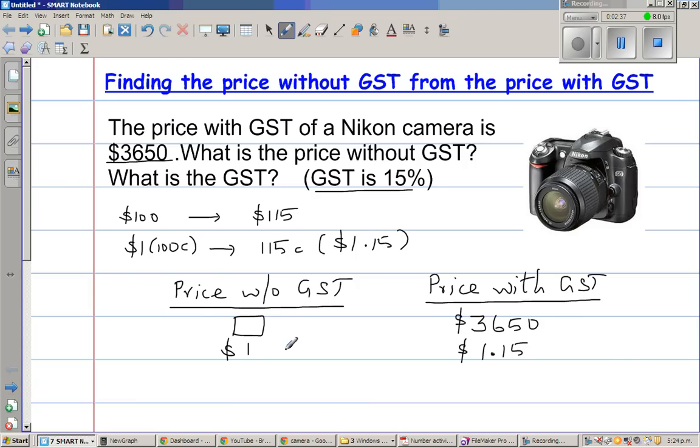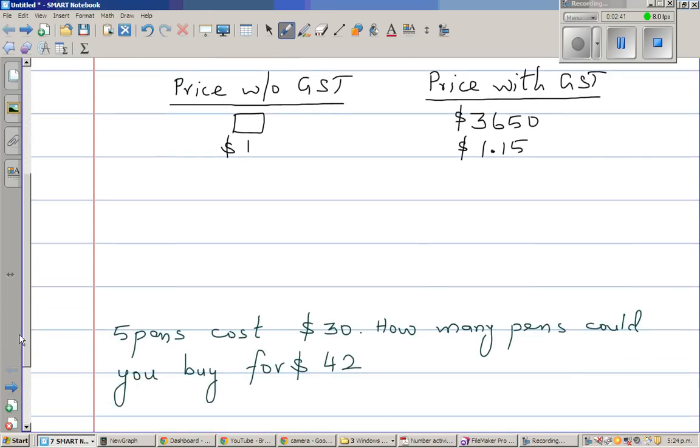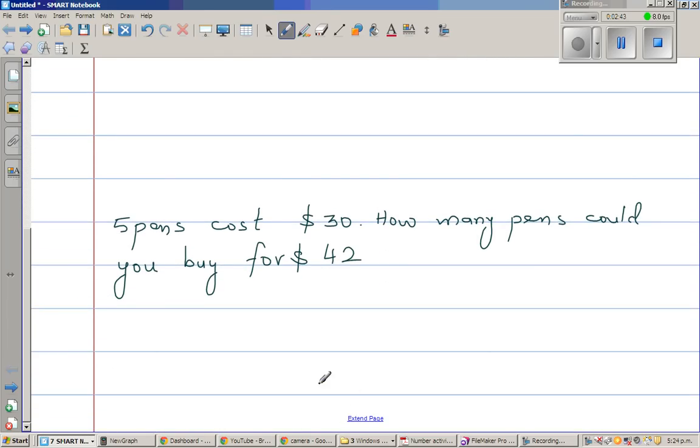So before I go to the next step, I would like to do this example. This is an example that I have made. Five pins cost $30. How many pins could you buy for $42? So let me make up two columns. Number of pins. This is an example of ratio. Most of you can do this. Number of pins and dollars.